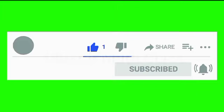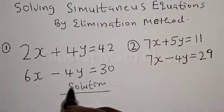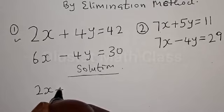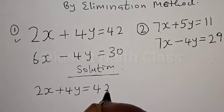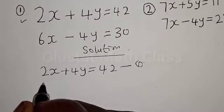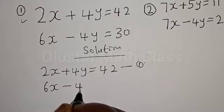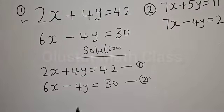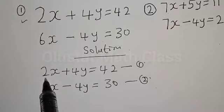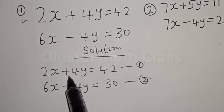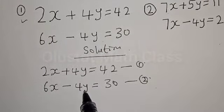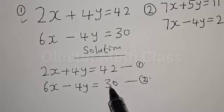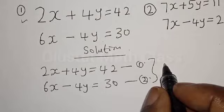Solution. Let's start with the first question. We have 2x plus 4y is equal to 42 — let's call this equation 1. Then we have 6x minus 4y equal to 30 — let's call this equation 2. Since we are using the elimination method, the coefficient of x here is 2 and the coefficient of x here is 6. The coefficient of y here is plus 4 and here is minus 4. Since plus 4 and minus 4 gives 0, we can add equations 1 and 2.